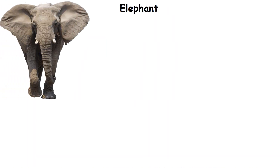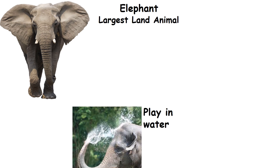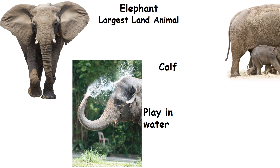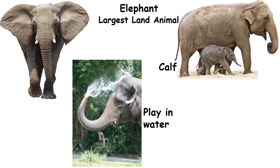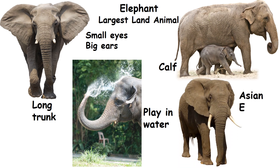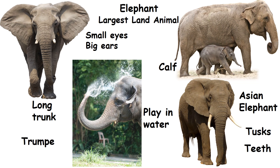Elephant: It is the largest land animal. It loves to play in the water. Its young one is called a calf. The elephant has a long trunk, small eyes and big ears. Asian male elephants have tusks. Tusks are the modified form of teeth. The sound of an elephant is called a trumpet.